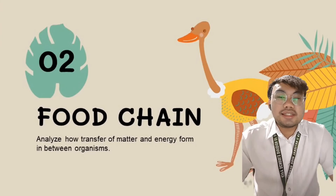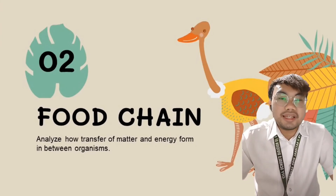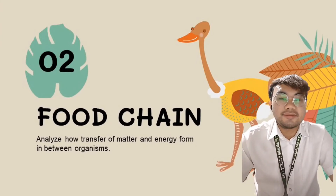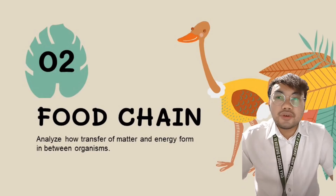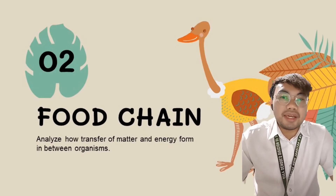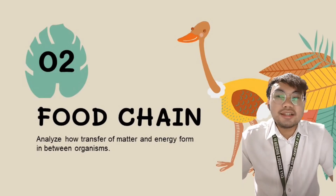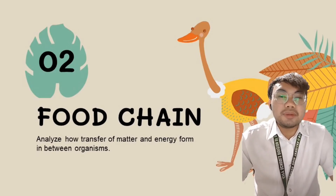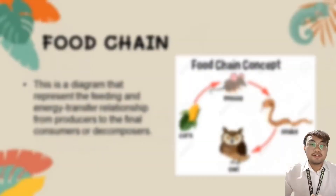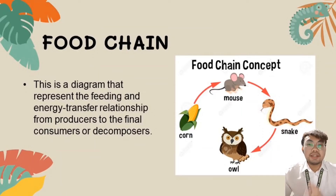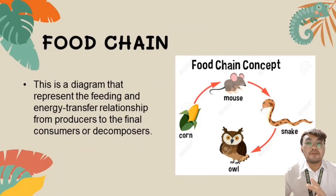Now that you have recalled about the ecosystem, let's analyze how the transfer of matter and energy forms between organisms. For us to know how this transfer happens, let's learn what food chain and food web are all about. A food chain is a diagram that represents the feeding and energy transfer relationship from producers to the final consumers or decomposers.